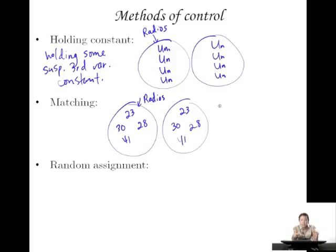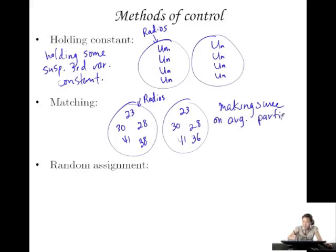And so you could do point-by-point matching, or you could do just having roughly even matching. So for here, we might have a 38-year-old, but here we might have a 36-year-old. But if we take the means of these two groups, they'll be roughly equivalent on this variable of age. So making sure, on average, participants in both groups equivalent on some third variable.